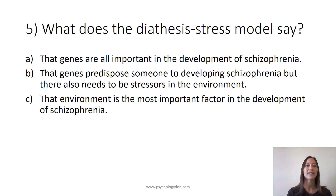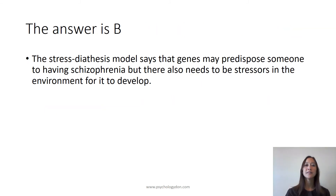Question 5: What does the stress-diathesis model say? A: That genes are all important in the development of schizophrenia. B: That genes predispose someone to developing schizophrenia, but there also needs to be stressors in the environment. The answer is B. The stress-diathesis model says that genes may predispose someone to having schizophrenia, but there also needs to be stressors in the environment for it to develop.